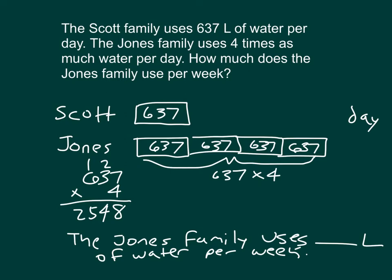637 times 4 will give us the amount that they use per day. So the Jones family uses 2,548 liters per day, and the Scott family uses 637. But what's being asked is per week. How many days are in a week? Well, there's seven. So the Jones family in a week will be the amount they used in a day, and we multiply by seven.